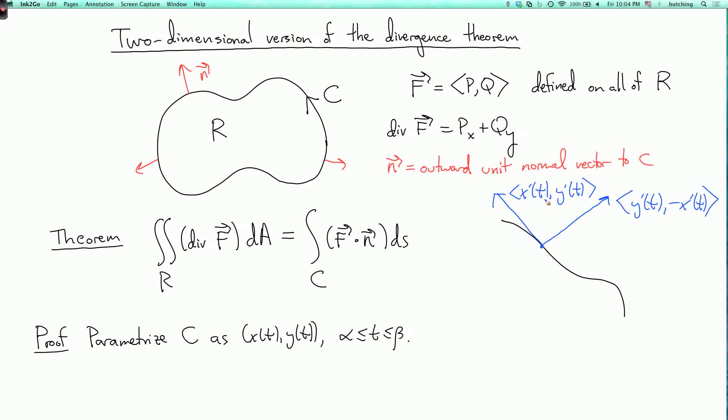And also, you can check that this is pointing in the correct direction. So if the curve is oriented like this, then this will be pointing out of the region. So the region R is over here. And you can check that just by noting that the cross product, or actually, I could say more precisely, the determinant, where you put this vector first and that vector second, is positive. Okay?